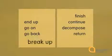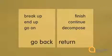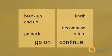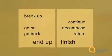Notice that sometimes the preposition will give you an indication as to what the phrasal verb might mean. Let's look at these four and match the meanings. Break down means to decompose. Go back means to return. Go on means to continue, and end up means to finish.